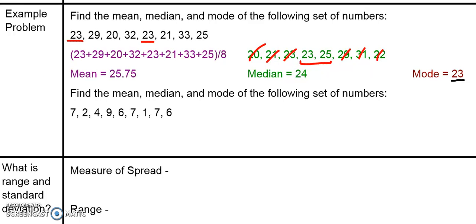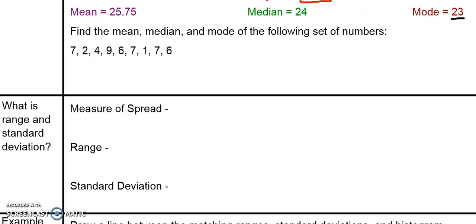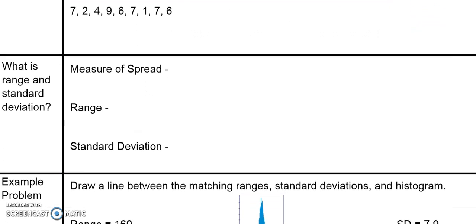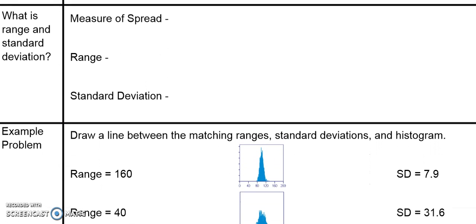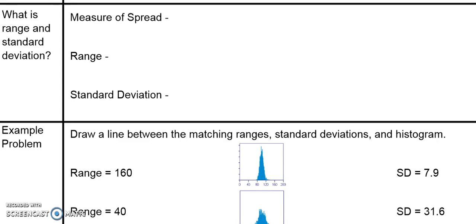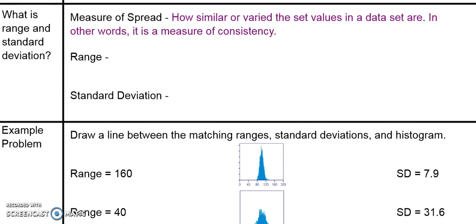So we've talked about measures of center — what's typical or average, things like mean, median, and mode. But we also have to talk about measures of spread. Spread is how similar or varied the set of values in a data set are. In other words, it's a measure of consistency — how consistent are all those data points?